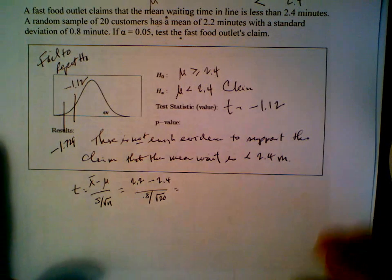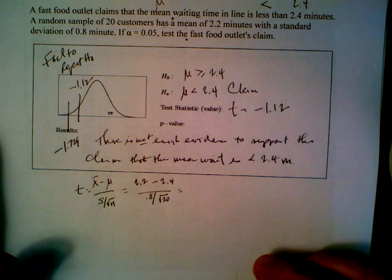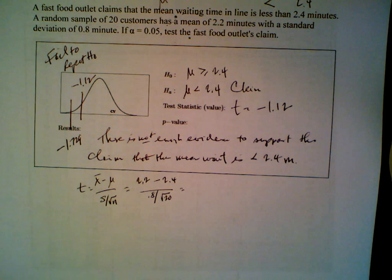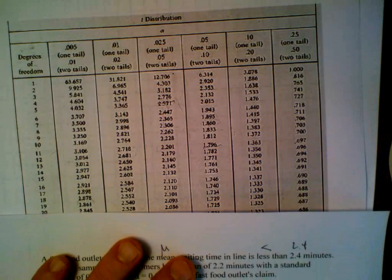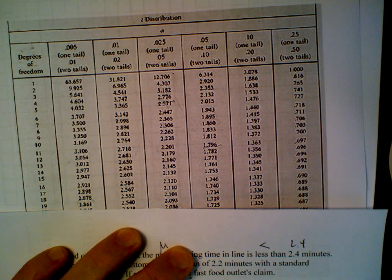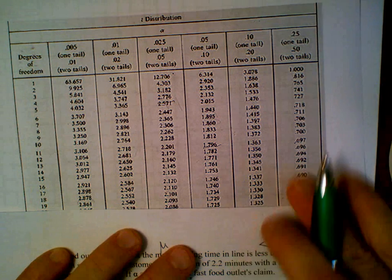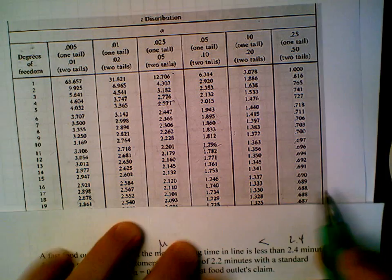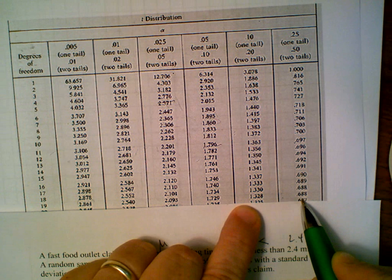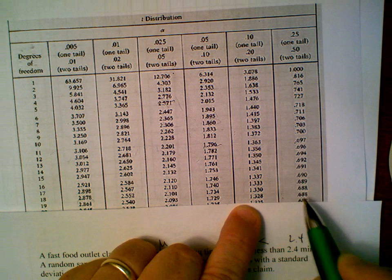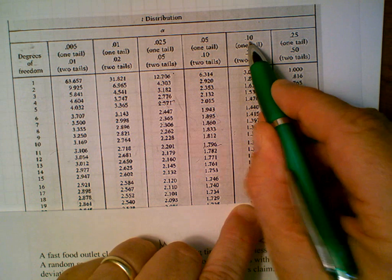Last thing. If you're not doing it with a calculator, the best you can do with the p-value is to bracket it. Let me show you how this works. We go down to the 19 degrees of freedom line. Remember that our number was 1.12. You can see that 1.12 falls between 1.328 and 0.688. What that's telling us is that the p-value falls between 0.1 and 0.25.